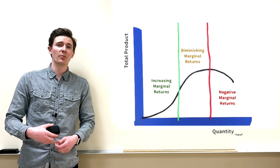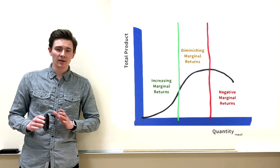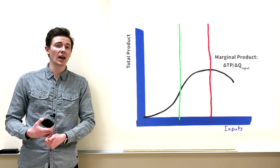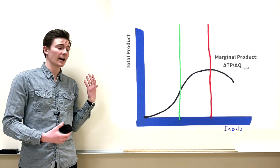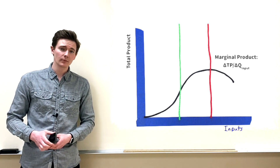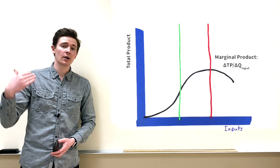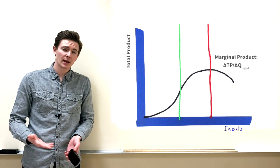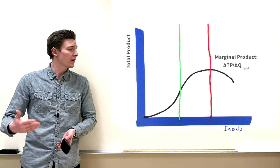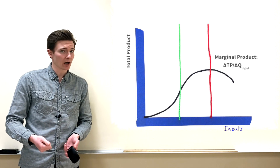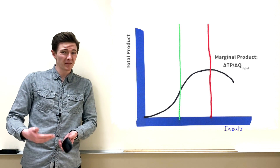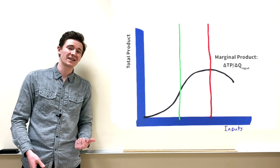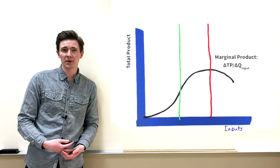This is important because throughout microeconomics we use marginal product, which is your change in total product divided by a change in quantity of an input. So those three sections correspond to increasing marginal product, diminishing marginal product, and negative marginal product. Marginal product is the slope of this total product curve.